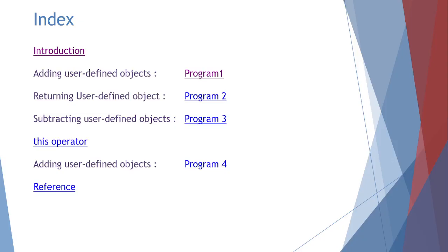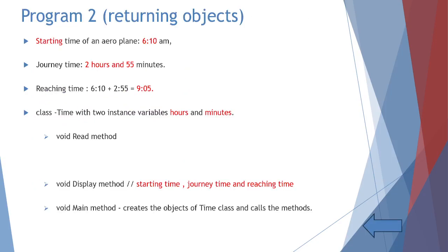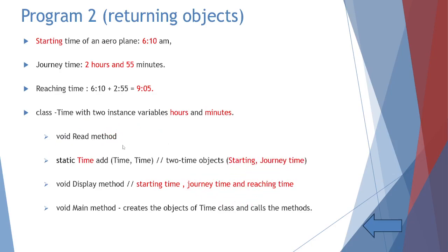Now let's see the second program, which has a method that returns a user-defined object. Starting time is 6h 10min, journey time is 2h 55min, reaching time is 9:05. The Time class has two instance variables. This time the method is 'static Time2' — not void — taking two objects as parameters and returning one object.